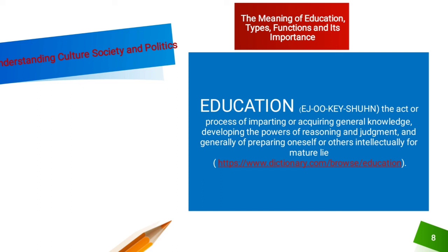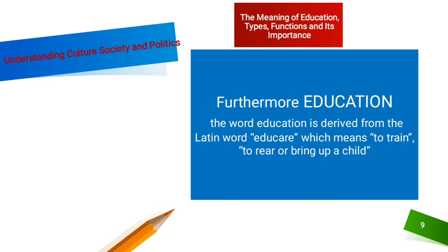However, education as a social institution has a different meaning. Dr. William Liel (2014) held that education is a social institution through which a society's children are taught basic academic knowledge, learning skills, and cultural norms. Furthermore, the word education is derived from the Latin word 'educere,' which means to train, to rear, or bring up. Hence, it plays a significant role in transferring culture and social norms among members of society in the process of training and various modalities of educating.